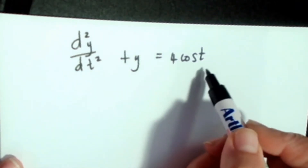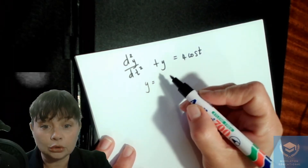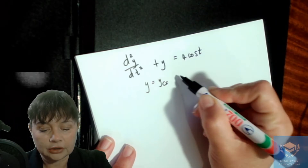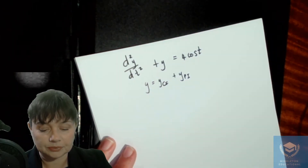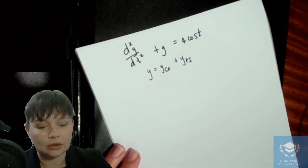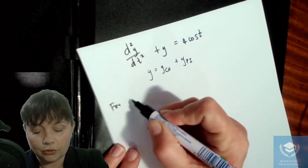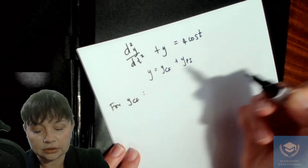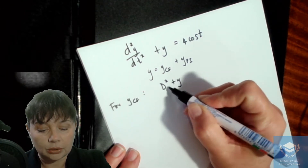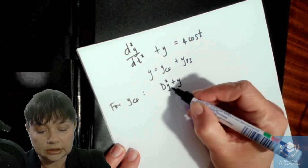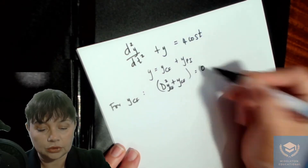Because it's non-homogeneous, we know that our answer is going to be equal to two parts: your complementary function plus your particular integral. So let's have a look at what we do for the complementary function. For the complementary function, we know that you can write your equation in terms of this equal to zero.